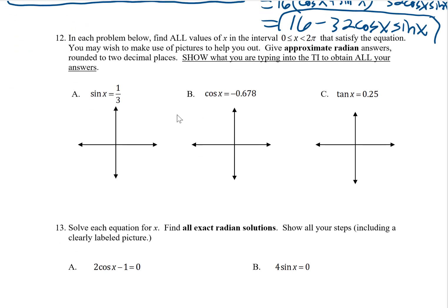Problem number 12. We want to find all the values of x between 0 and 2π that satisfy the equation. This is similar to what we've already done, only this time we're going to go to the calculator. These are not nice ones we can do by hand, so we'll be giving approximate answers. Same idea though. I see sine x equals 1 third.